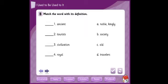Ancient means very old, قديم, so the answer is C. Tourist means سياح or travelers رحالة. Civilization, حضارة, is society, مجتمع. And the last one, royal, is noble or kingly. Good.